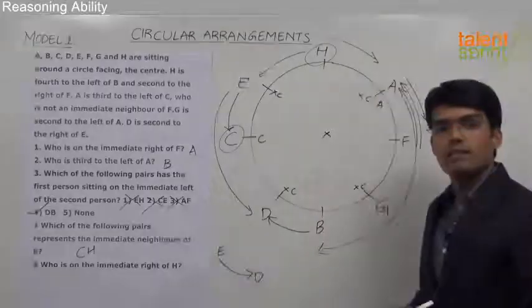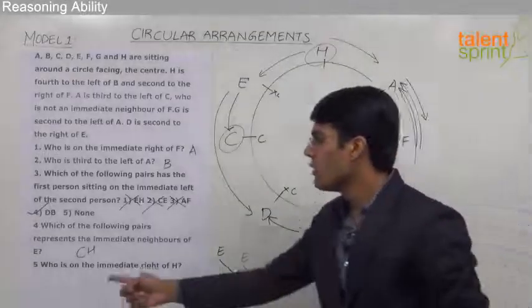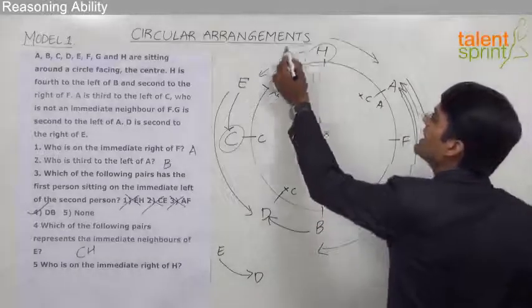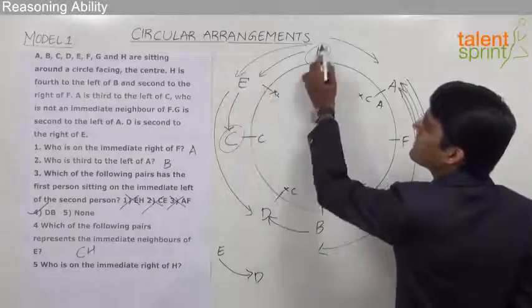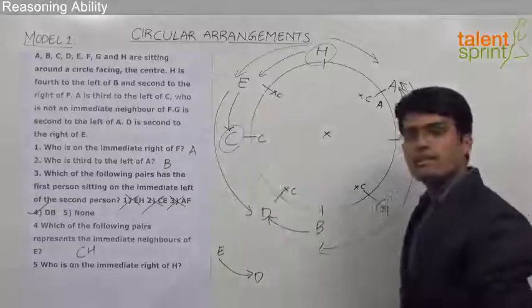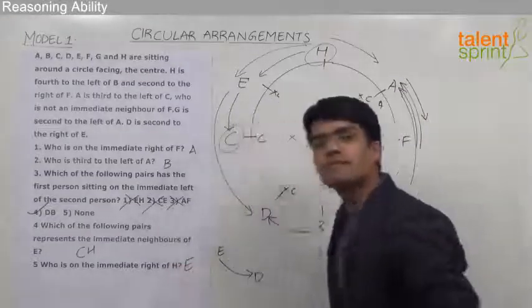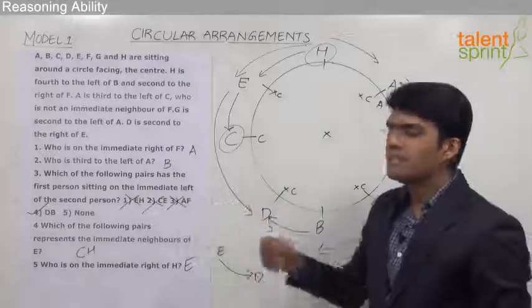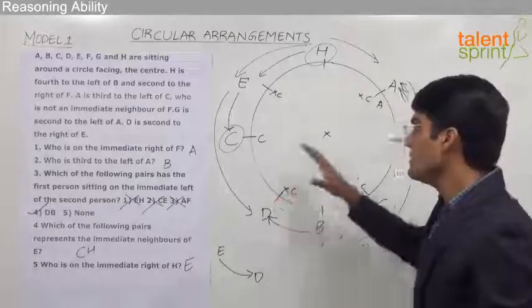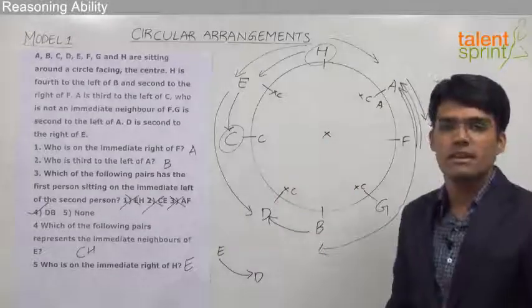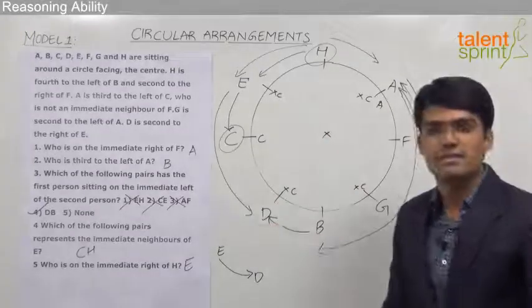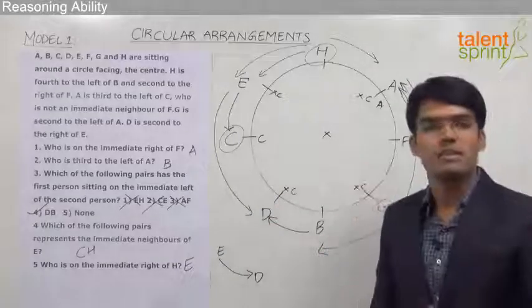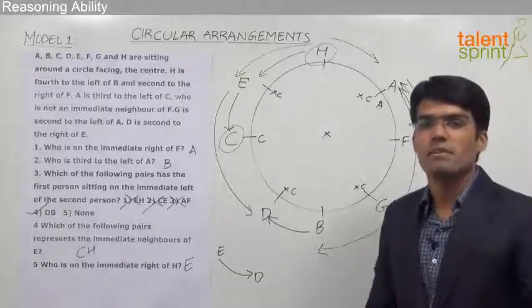The last question: who is on the immediate right of H? Right of H is in the anticlockwise direction, and the person immediately to the right of H is E. So the answer for question 5 is E. As you have seen, answering these five questions doesn't take any time once we properly complete the circular arrangement. Read the statements carefully and follow a step-by-step procedure to complete the circular arrangement using the points we have discussed.